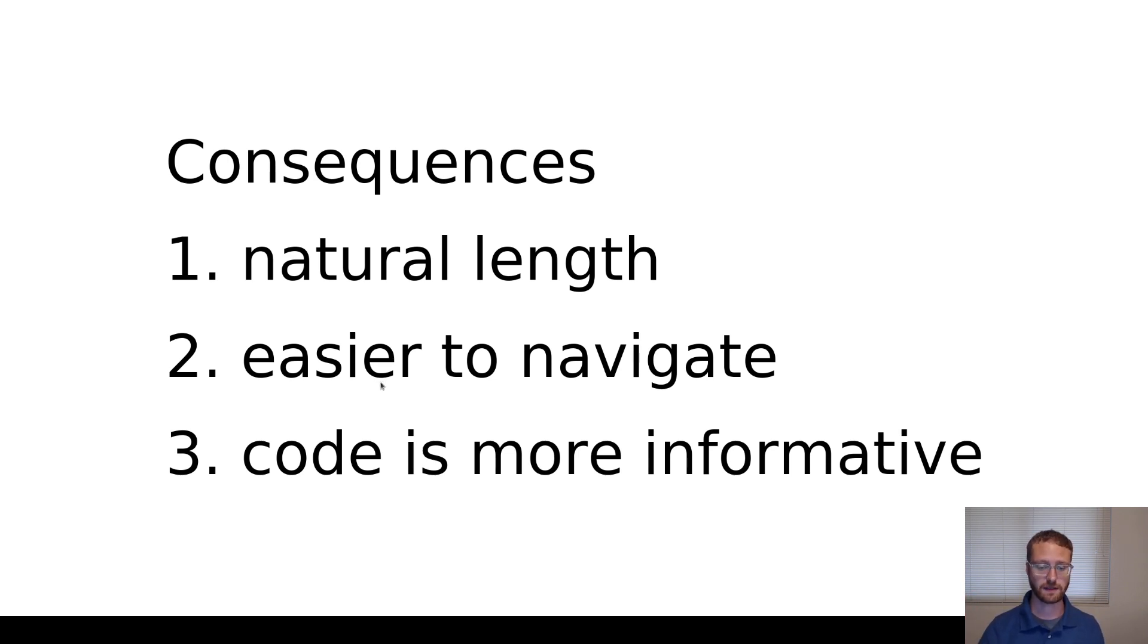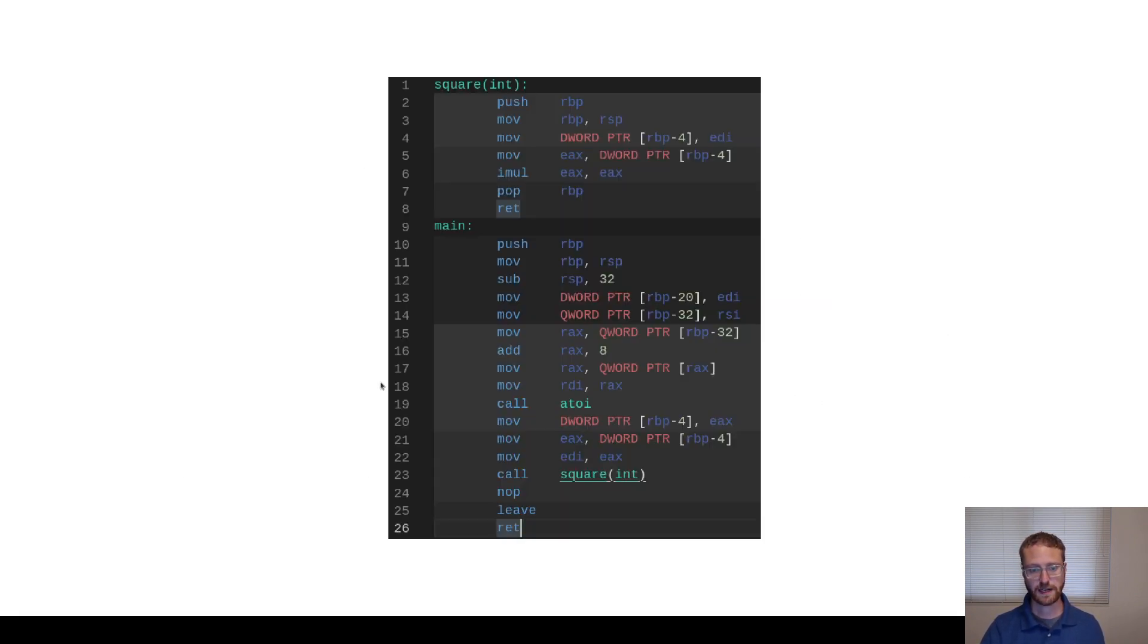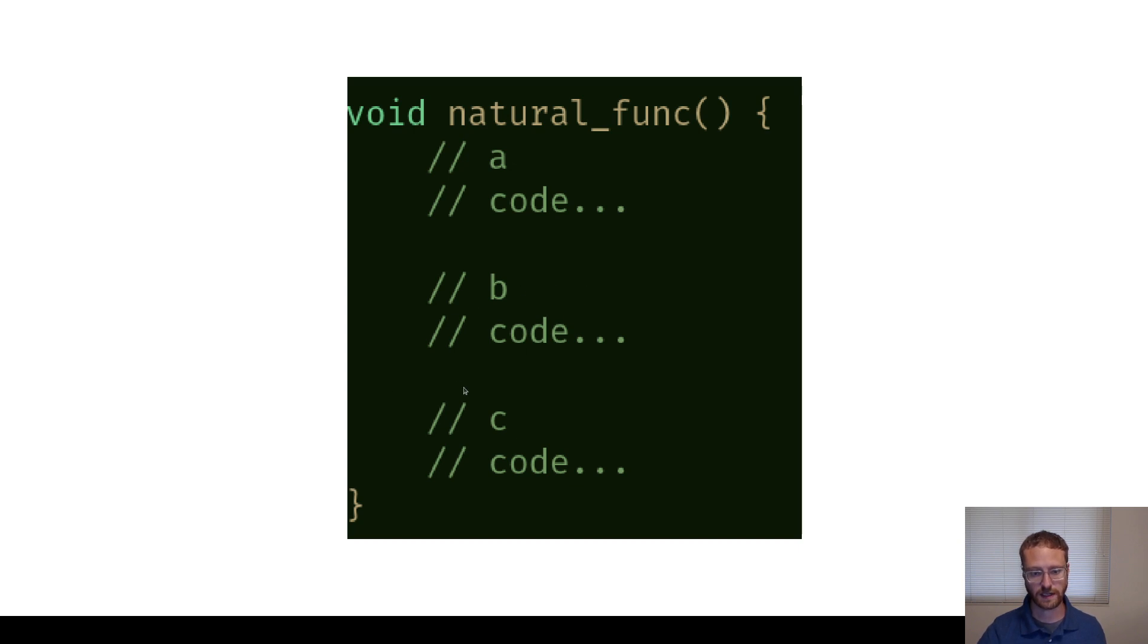And also to update things. Let's say that you end up creating a new feature in the future and this little block of code B here ends up having to be duplicated somewhere else in the application. Well, you can actually pull this out and then make B a function call, because now that is duplicated code that is factored out.